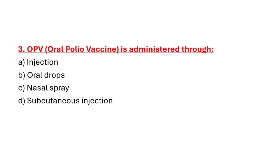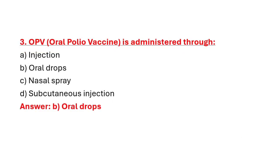Question 3: OPV is administered through. Option A: Injection. Option B: Oral drops. Option C: Nasal spray. Option D: Subcutaneous injection. Correct answer is Option B: Oral drops.